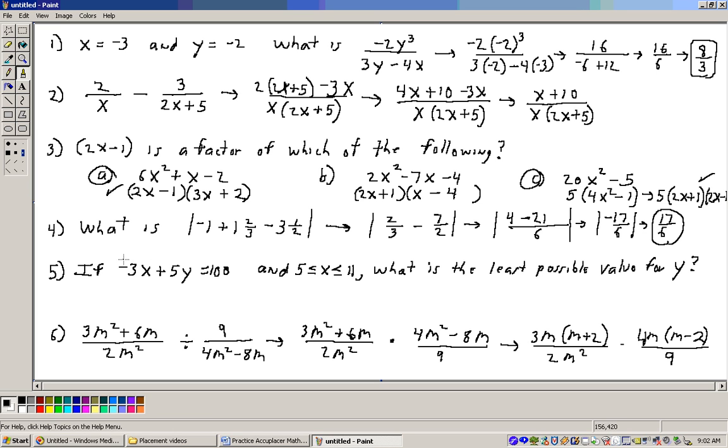Okay, on problem 5, if negative 3x plus 5y equals 100 and x is between 5 and 11, what is the least possible value for y? Well, the bigger number that I would put in for x makes the x more and more negative, which means that y has to be bigger and bigger. So if I want the least possible value for y, I better put in the smallest value of x.